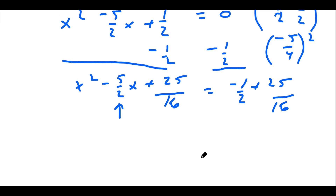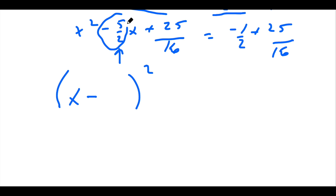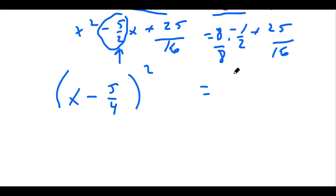So now we just have to factor the left side. Remember, when you factor, it's going to be a perfect square. So it's going to be x, and then half of this middle coefficient — so it's going to be x minus 5 over 4, the quantity squared. I just multiplied this by 1 half. On the right side, though, we have to get a common denominator. So if we multiply the numerator and denominator by 8, that's going to give us negative 8 sixteenths plus 25 sixteenths, which equals 17 sixteenths.